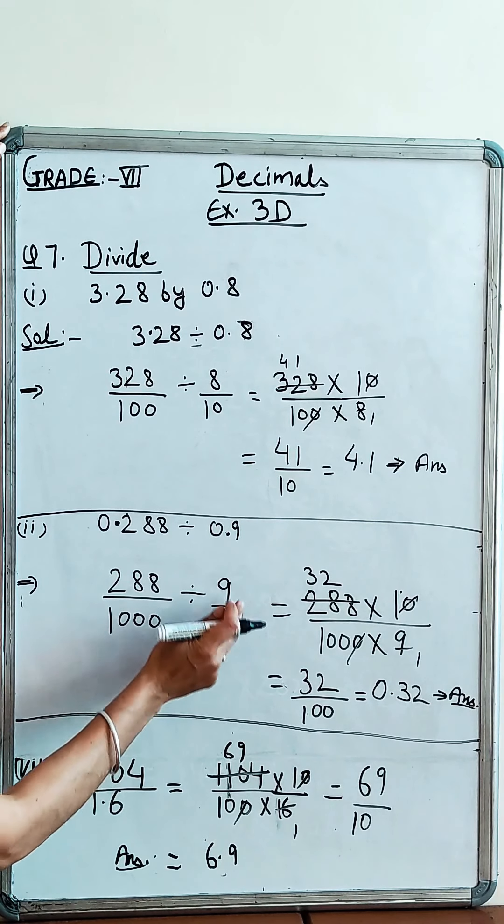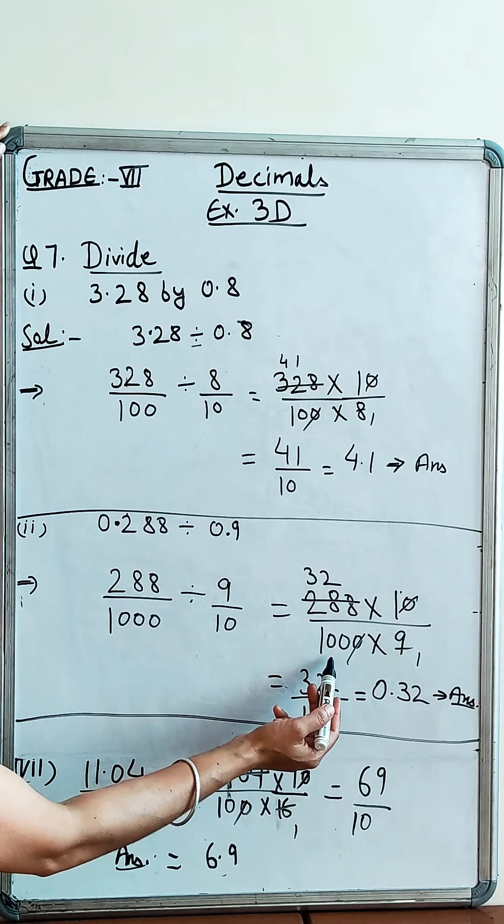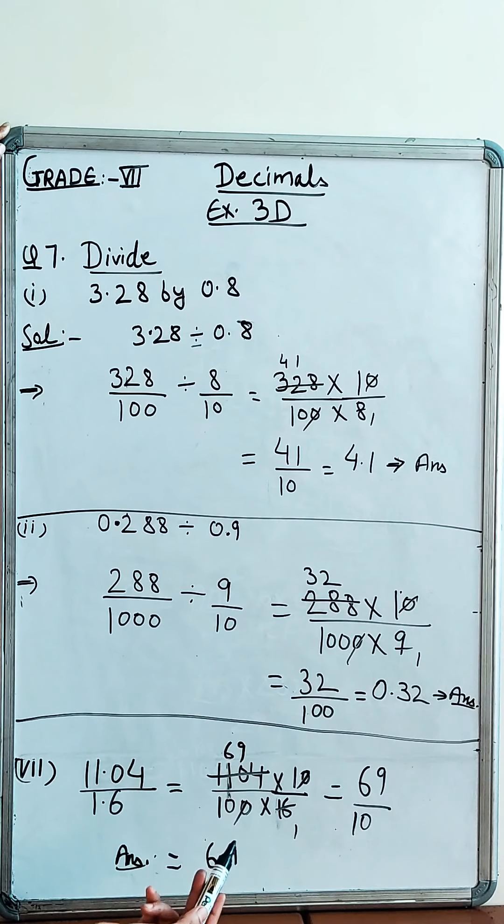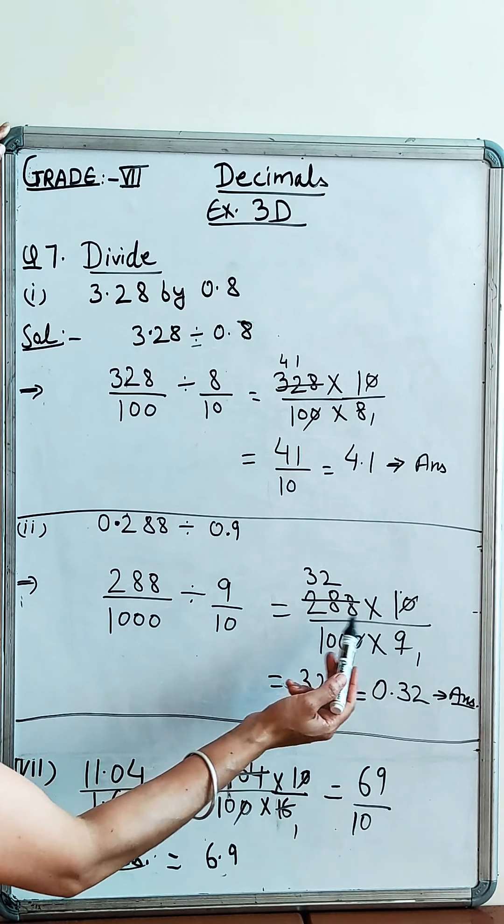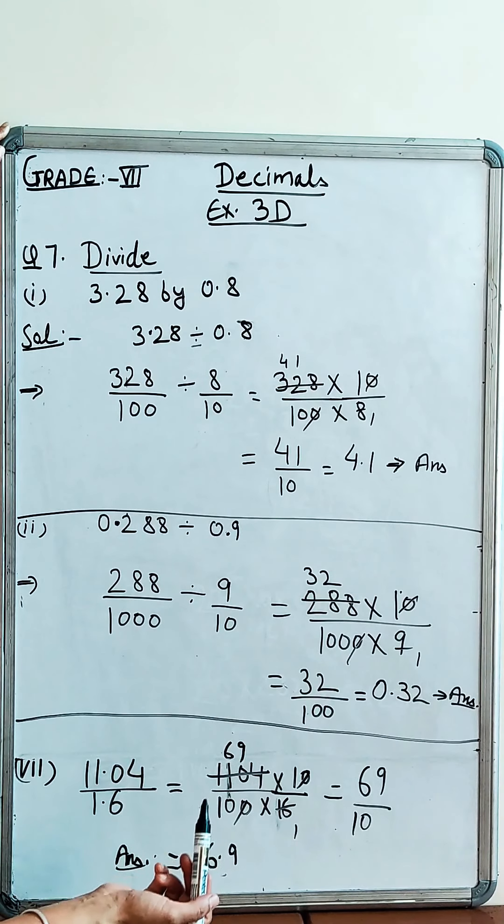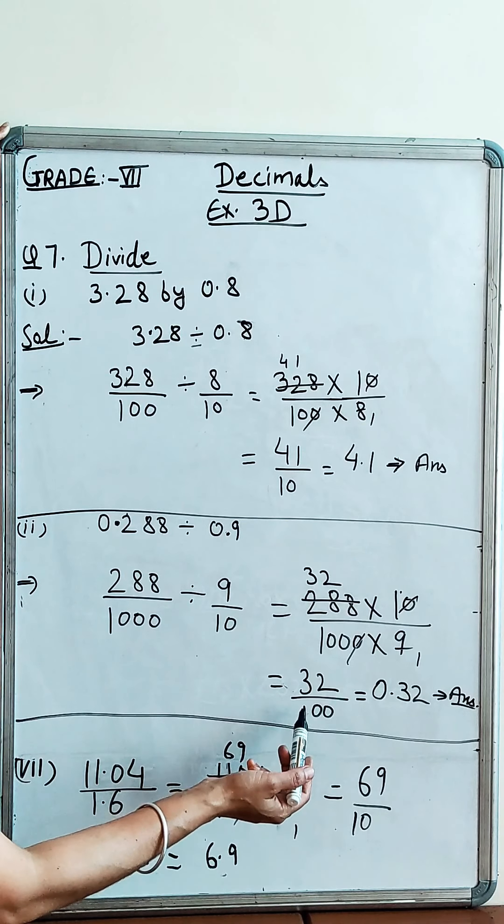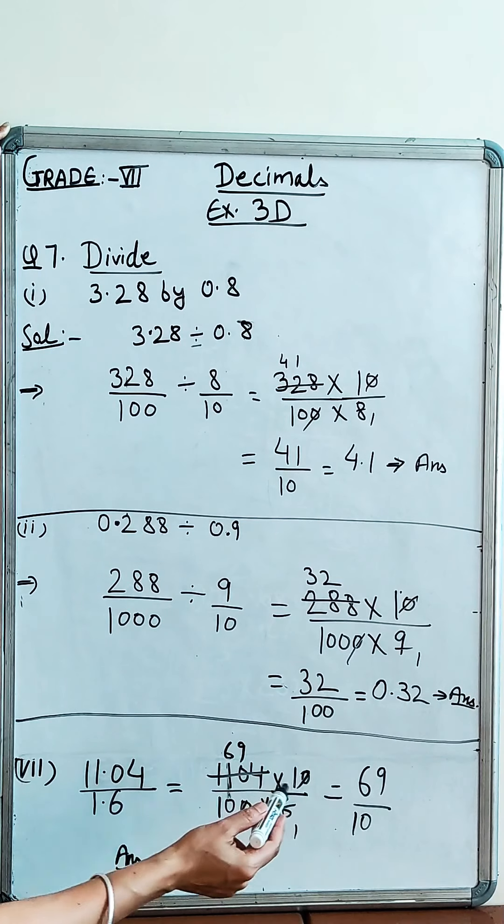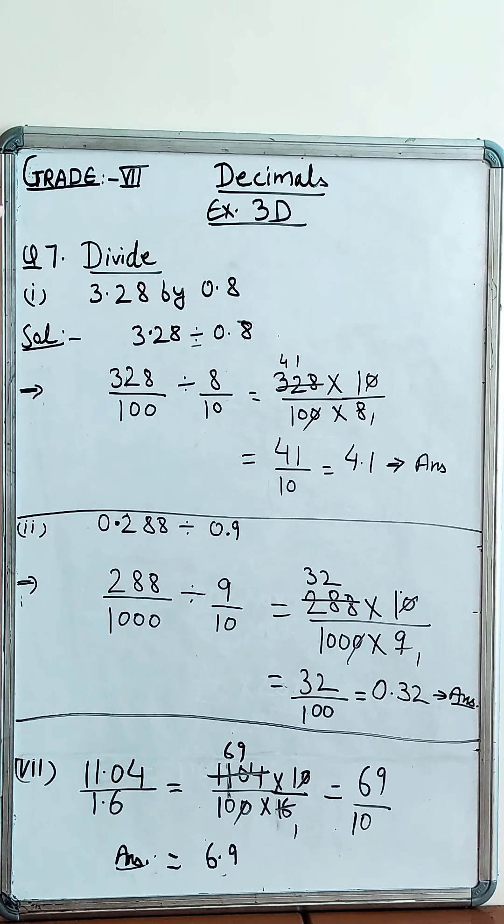Now, this is the right side reciprocal, which is 10 over 9. 288 over 1000, multiply by 10 over 9. Now, 1000 to 10 and 10 by 10 - we cut to get 100. So, 32 over 100, we have done decimal in the decimal. It is 0.32. Two zeros in the denominator means two numbers will be a decimal.